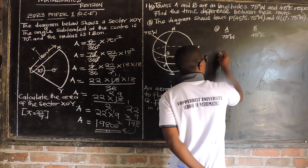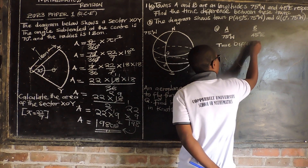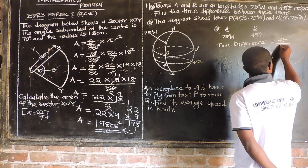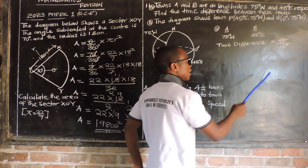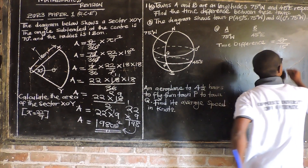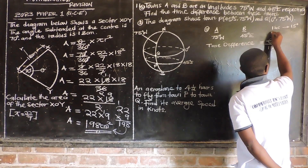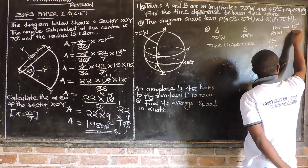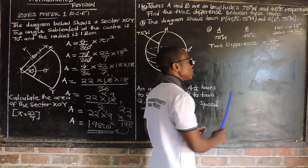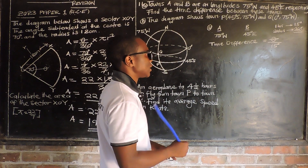So they want us to find the time difference between town A and town B. For us to find the time difference, remember: time difference is equal to theta over 15 degrees. Theta is the difference in longitudes. One hour is equal to 15 degrees, and 24 hours is equal to 360 degrees.